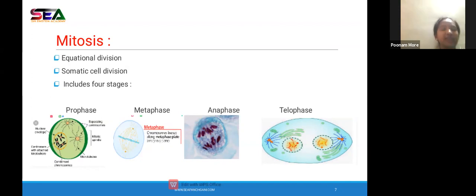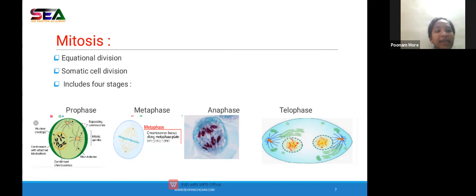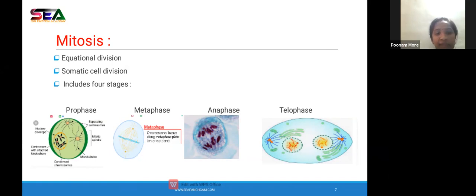Mitosis has four main phases: prophase, metaphase, anaphase, and telophase. In prophase, chromosomes start to condense. Chromatin material gets disintegrated. Nuclear membrane and nucleolus start to disappear. In metaphase, all chromosomes arrange themselves on the equatorial line. Anaphase is the shortest phase, where all chromosomes start to move towards the opposite poles — sister chromatids move to opposite poles. In telophase, two individual cells are formed.